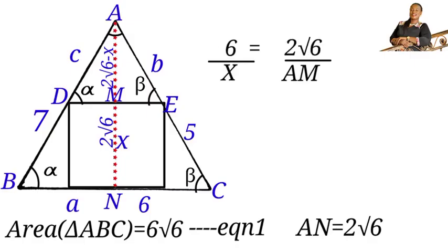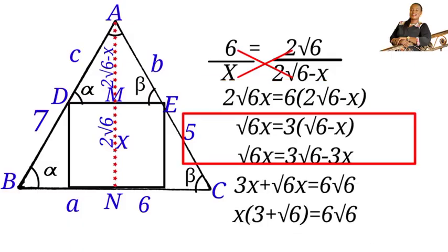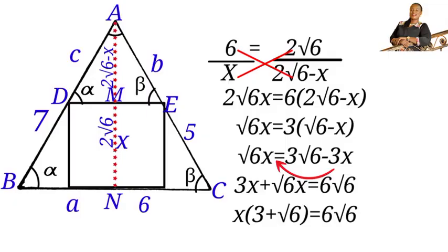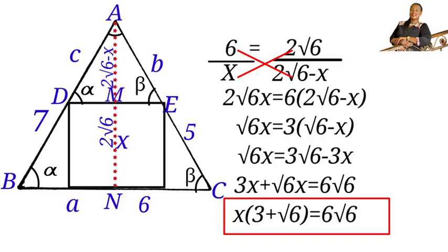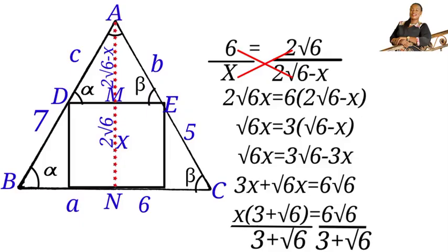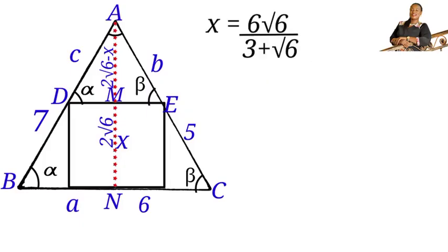Substituting the values, we have six over x equals two root six over two root six minus x. Cross-multiplying and simplifying gives us: three x plus root six times x equals six root six. Factoring out x, we get x times bracket three plus root six equals six root six, so x equals six root six all over three plus root six.